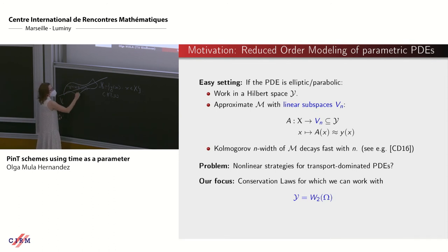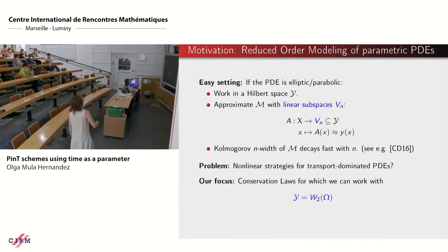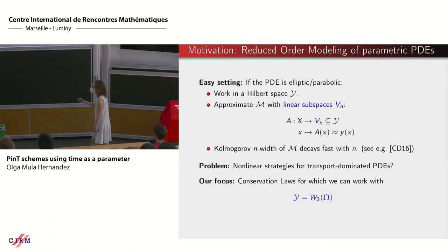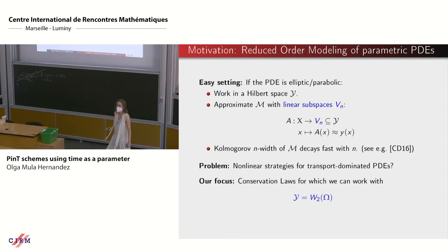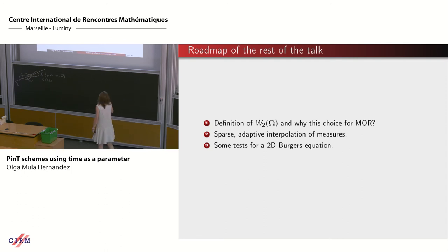For elliptic or parabolic problems, the classical MOR approach works well: we approximate the solution manifold by a linear subspace V_N, and for each parameter x, the community has efficient methods to approximate y(x) by an element of V_N. The dimension N is small, leading to very quick mappings. The problem is for transport-dominated problems, where the linear subspace approach fails entirely. Our work focuses on extending MOR to conservation laws.